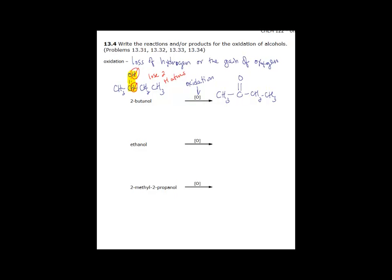So 2-butanol is a secondary alcohol. We oxidized it to what functional group? A C double bond O is a ketone. So secondary alcohols can be oxidized, and they're oxidized to ketones.